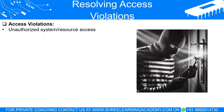An essential element to understand about access violations is that they can occur in two main scenarios. First, when an entirely unauthorized person logs into the system, often using stolen or cracked credentials — this is the more explicit violation, akin to a thief breaking into your house using a duplicated key. And second, access violations can happen when an authorized user accesses resources they are not allowed to. This is subtler, similar to a guest in your house snooping in your private room.